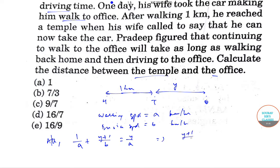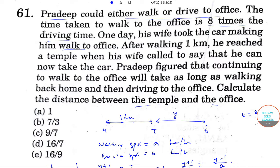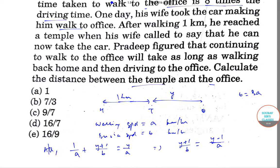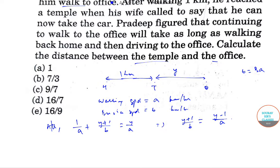We get y plus 1 by b is equal to y minus 1 by a. Now b is equal to 8a since the time taken to walk to office is 8 times the driving time. Therefore, 8 into y plus 1 by b is equal to y plus 1 by a.